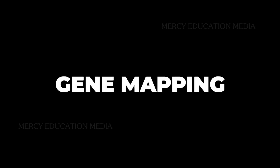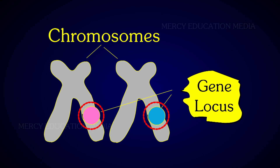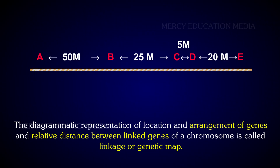What is gene mapping? Genes are arranged linearly in a chromosome. The point in a chromosome where the gene is located is called a locus. The diagrammatic representation of the location, arrangement, and relative distances between linked genes of a chromosome is called a linkage or genetic map.